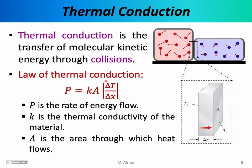Note that the law of thermal conduction is often written with absolute value signs, because in this context we'd like to talk about power as a positive quantity. In some applications, you may have to add a plus or minus sign manually. When we say the power is 10 watts, the hot object is losing 10 watts of power and the cold object is gaining 10 watts — so for the hot object, power is minus 10, but for the cold object, power is plus 10.